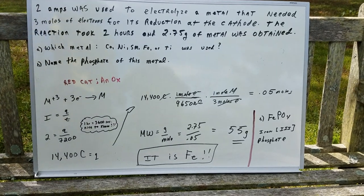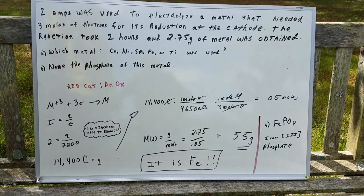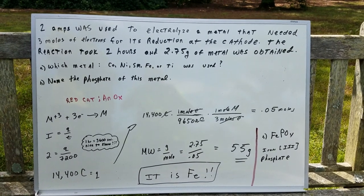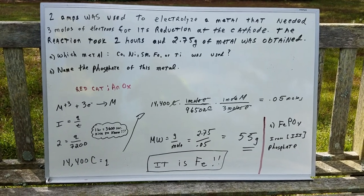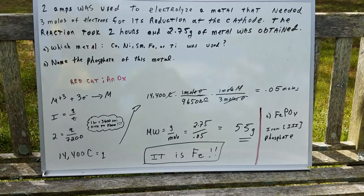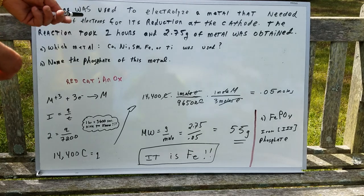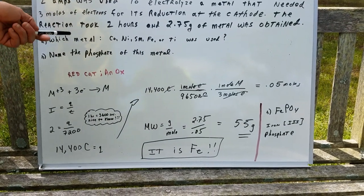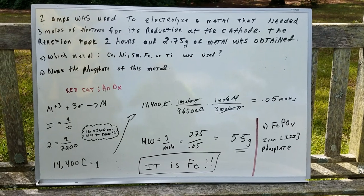I have two amps and I'm going to use it to electrolyze a metal that needed three moles of electrons for its reduction at the cathode. The reaction takes two hours and 2.75 grams of metal was obtained. And I want to know which of these metals - cobalt, nickel, samarium, iron or titanium - was used. And then finally, name the phosphate of this metal.